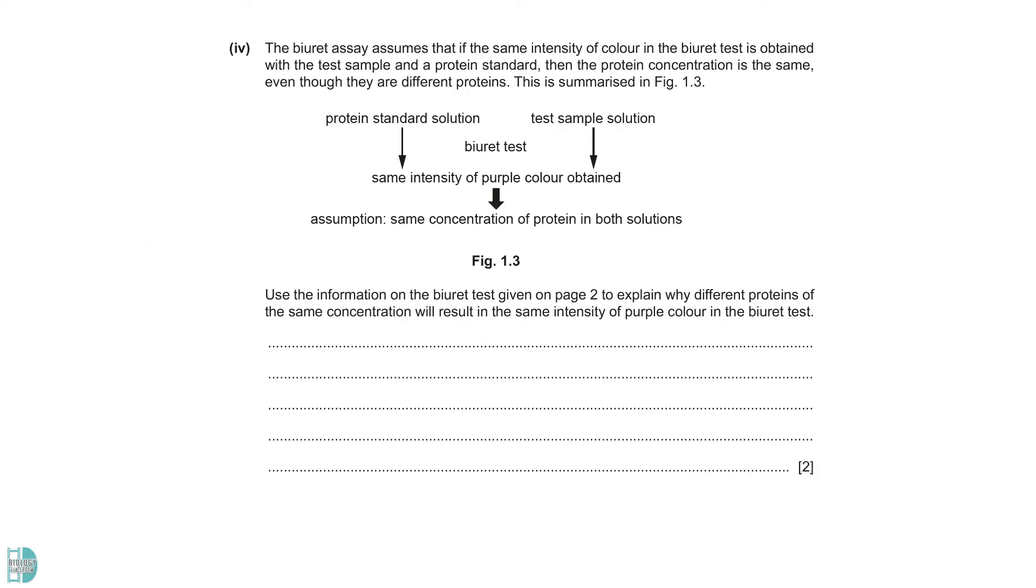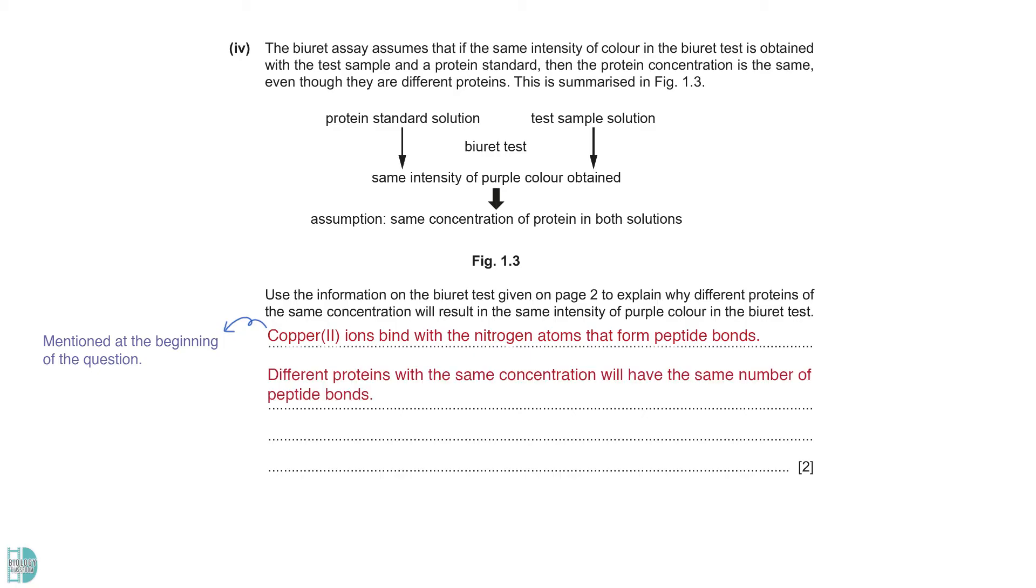Explain why different proteins of the same concentration will result in the same intensity of purple color in the Burette test. According to the information at the beginning of the question, the purple color is a result of copper-2 ions binding with nitrogen atoms that form peptide bonds. Since different proteins with the same concentration will have the same number of peptide bonds, there should be the same number of copper ions binding with the proteins, giving the same intensity of purple color.